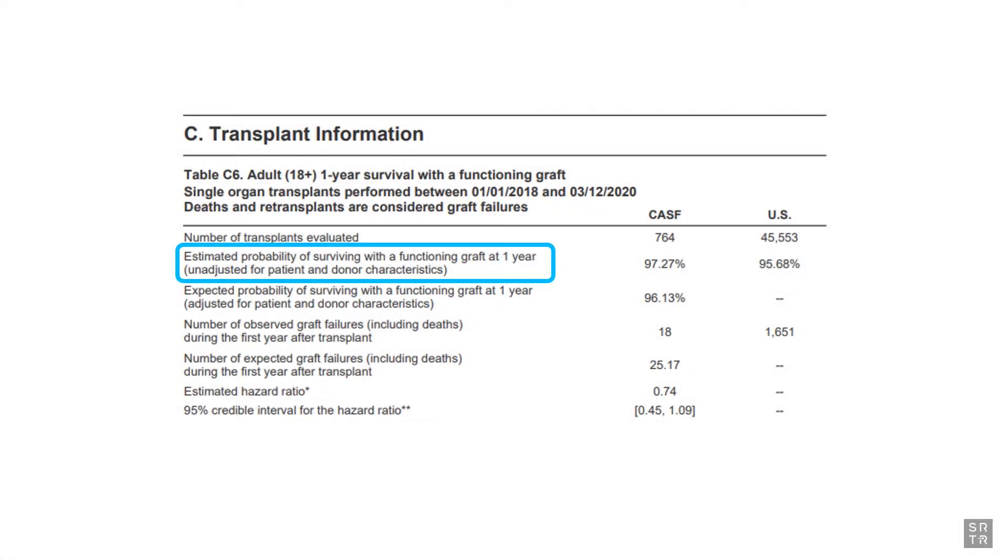This is a brief explanation of how SRTR calculates the estimated probability of survival. The estimated probability metric shows us a percentage that has not been adjusted with risk adjustments, and so it can be viewed as the observed rate of survival.